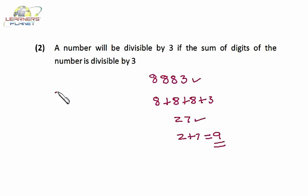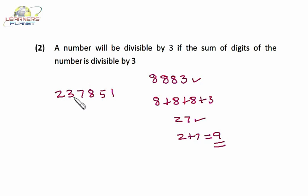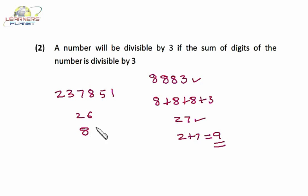Let's take one more example: 237851. We have to find out whether this number is divisible by 3 or not. Just add up the digits: 2 plus 3 is 5, plus 7 is 12, plus 8 is 20, plus 5 is 25, plus 1 is 26. Adding the digits of 26: 2 plus 6 equals 8. Now 8 is not divisible by 3, that's why 26 is not divisible by 3, and hence 237851 is not divisible by 3. I hope you are clear with the divisibility test of 3.